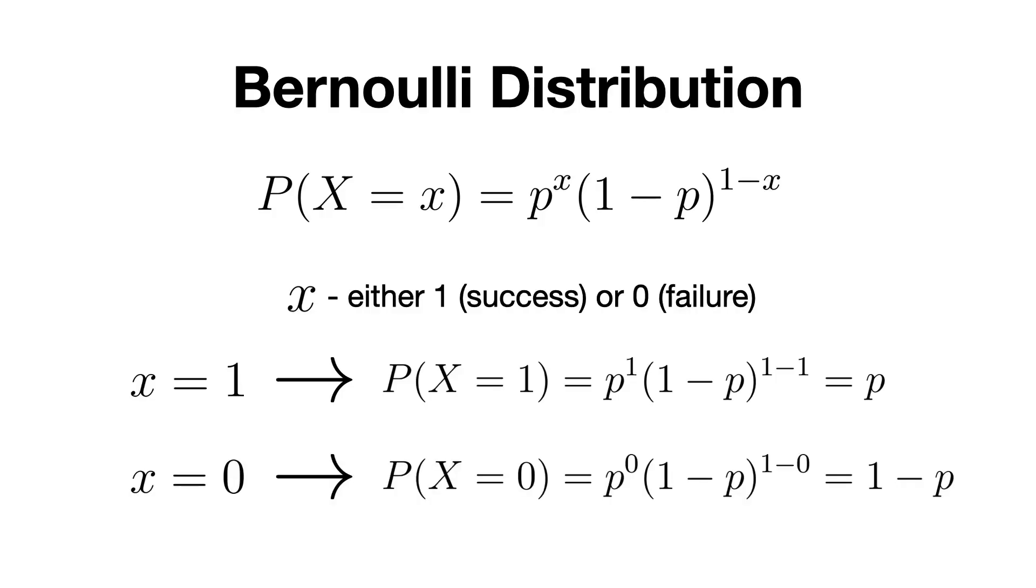Otherwise, if x equals 0, which means failure, then we remain only with the right side of the equation, since p to the power of 0 will be 1. So, P(X = 0) will be 1-p, the probability of failure. This formula might look really simple, and indeed it is, but it's really important since it is the foundation for all distributions we'll talk in this video.